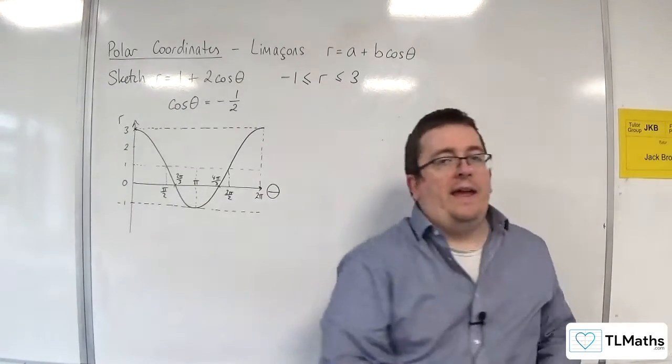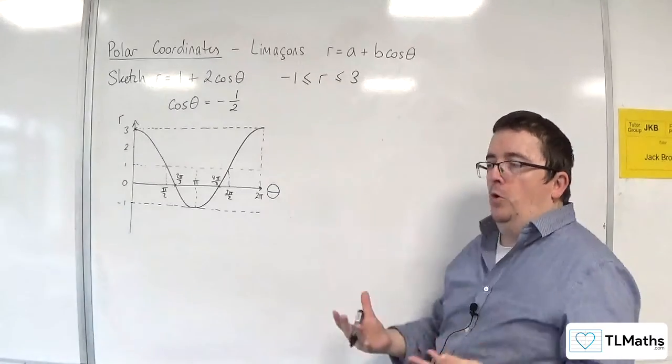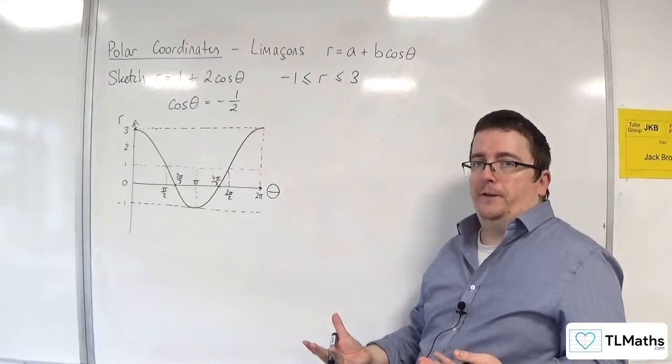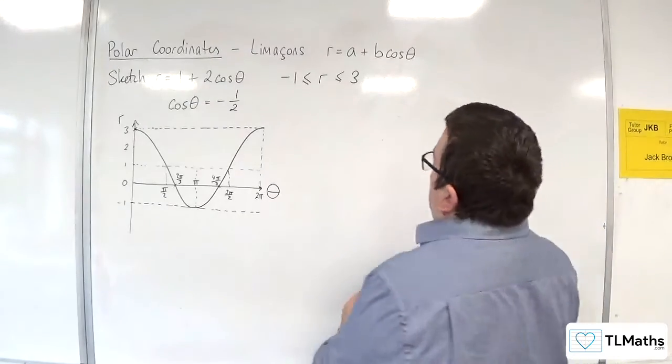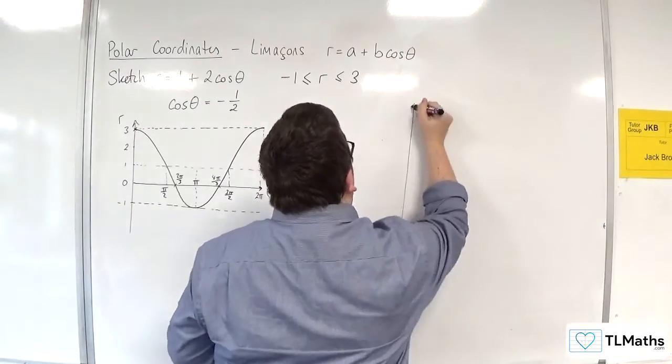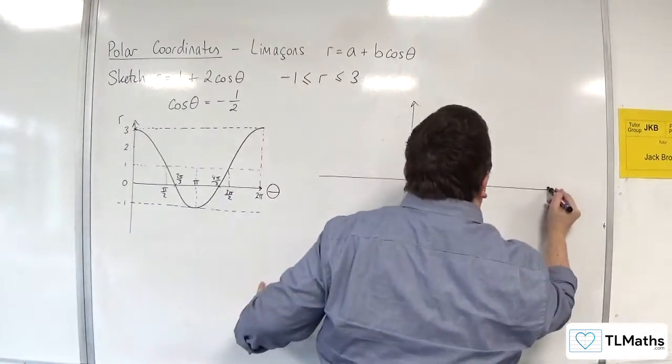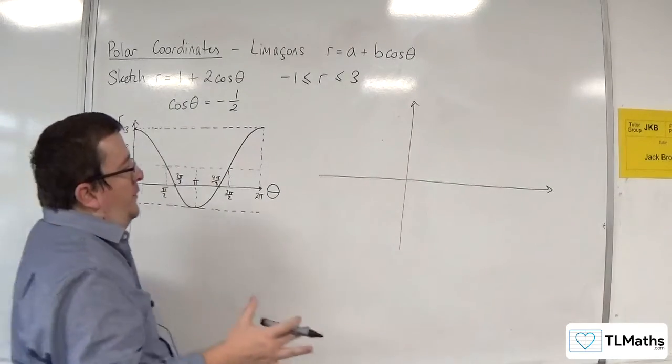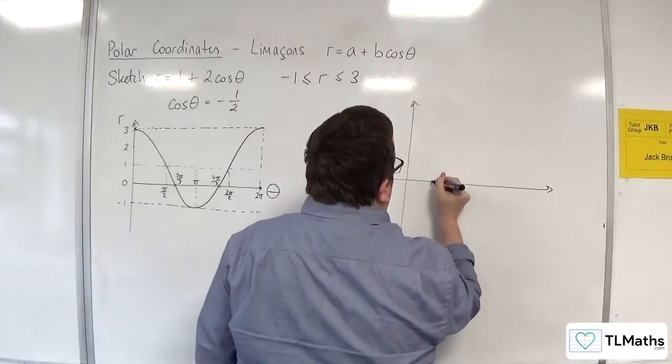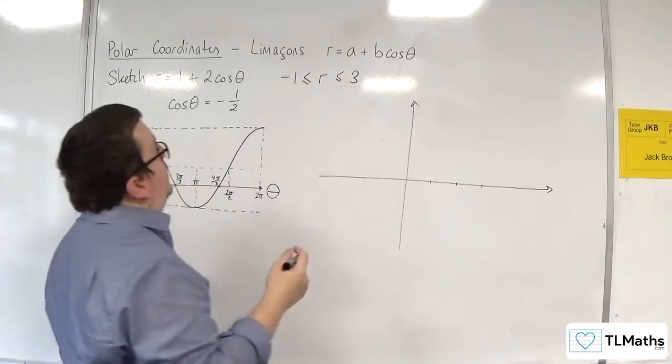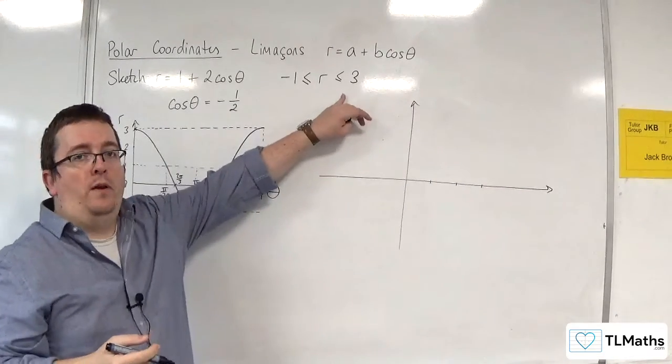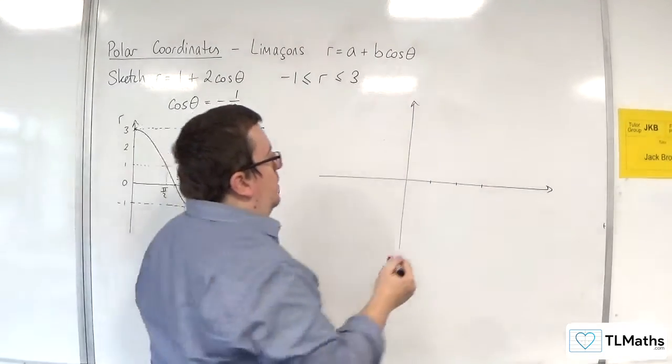So what this is going to do is it's going to help us sketch what the polar curve actually looks like. So the first thing I'm going to do is I'm going to label it. Just so I've got an idea. Because I know that the r's got to go between minus 1 and 3. So here we are. 1, 2, 3 away from the origin.